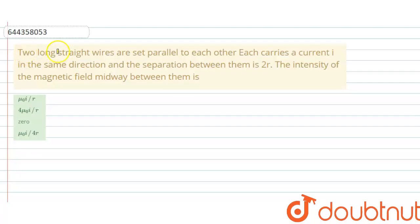Hello everyone, let me explain this question to you. Two long straight wires are set parallel to each other. Each carries a current I in the same direction and the separation between them is 2R. The intensity of the magnetic field midway between them is... There are four options given.